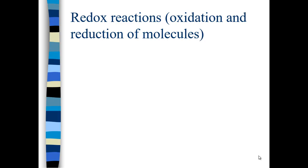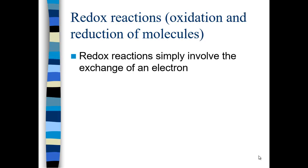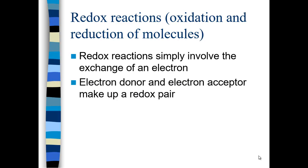We also talk about redox reactions, which include oxidation and reduction. Oxidation and reduction simply involve the exchange of an electron. There's always an electron donor, which gives up its electron, and an electron acceptor, making what's called a redox pair. The electron donor just shuttles that electron to its acceptor and a resulting reaction occurs. It's not just the electron that's transferred — you also usually see the transfer of a hydrogen at the same time.